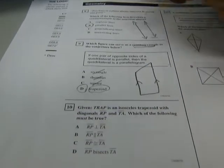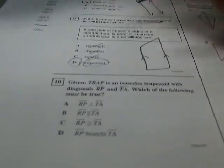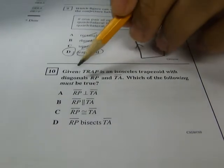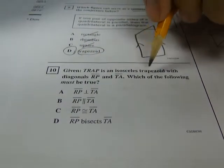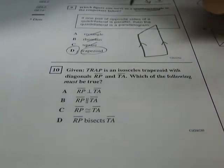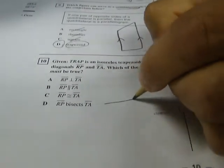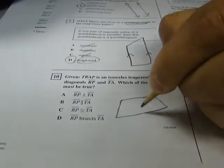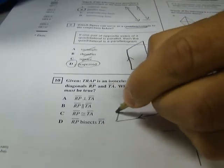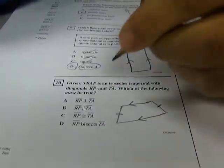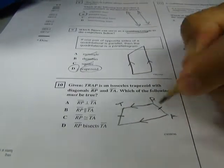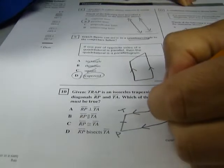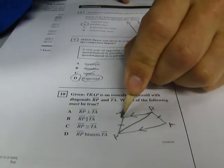So number 10, TRAP is an isosceles trapezoid with diagonals RP and TA. Which of the following must be true? Okay, a problem like this, you definitely need to draw something. So an isosceles trapezoid. Here's what we know about isosceles trapezoids. The bases are parallel and the legs are congruent. And it says that TRAP are the vertices. And then the diagonals are RP. So this is diagonal RP and diagonal TA.